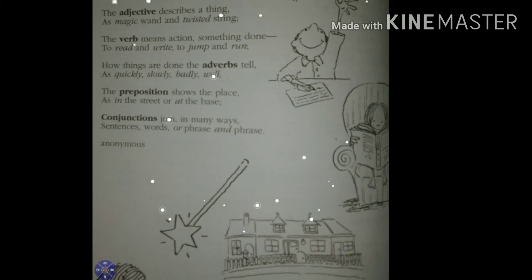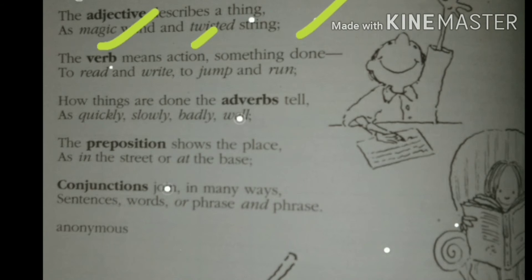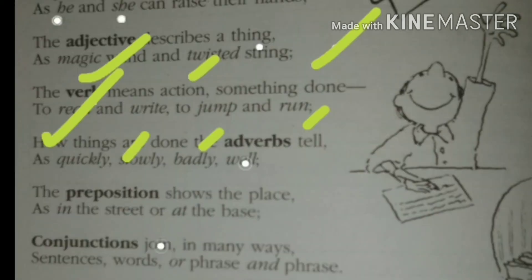So now move on to the verb. The verb means action, something done. A noun or pronoun does some actions and these actions are called verb. I have recorded this video for you. You are watching this video. I am speaking here. So speaking, watching, read, write, jump, run. The actions, all the actions we do come under the category of verb. Very simple and clear.